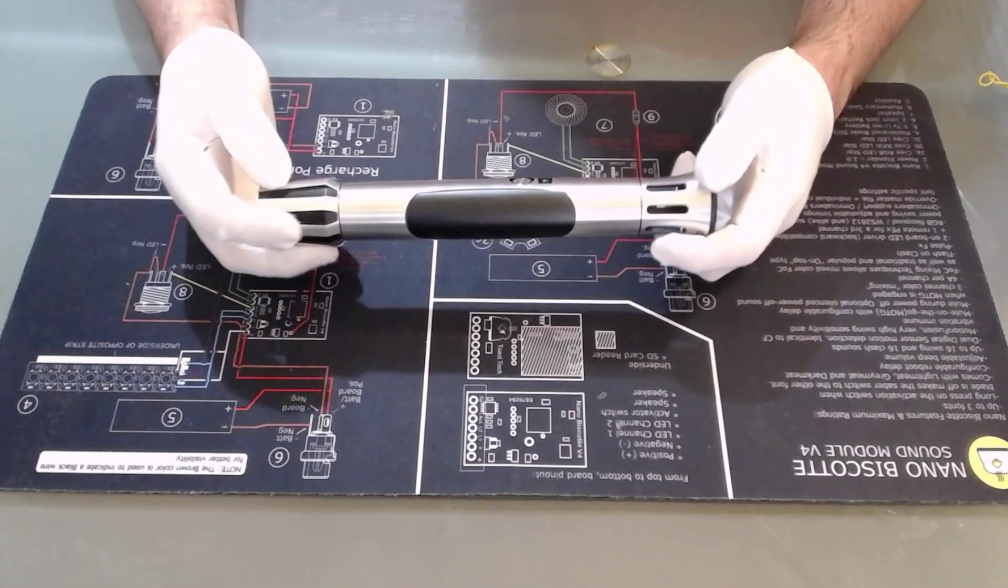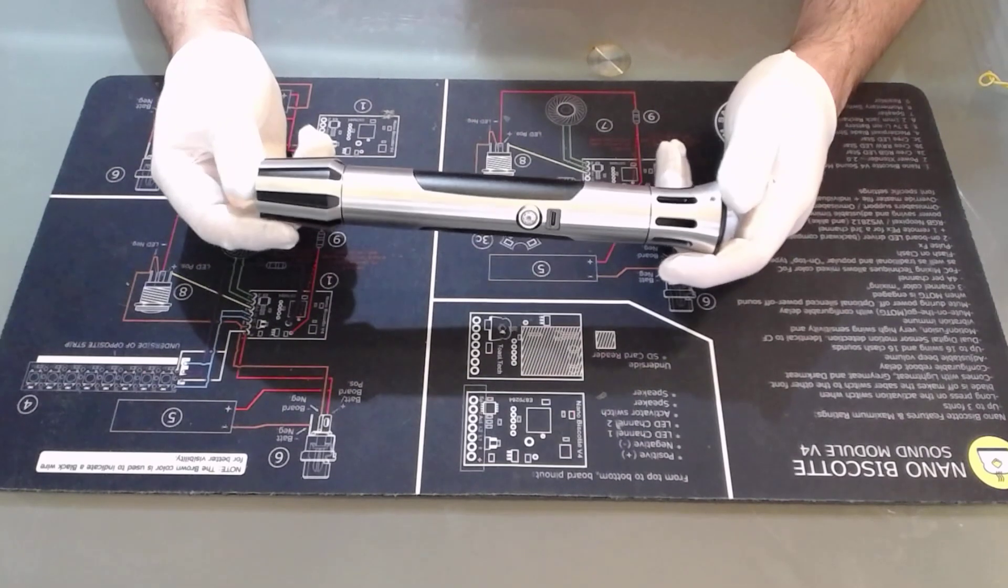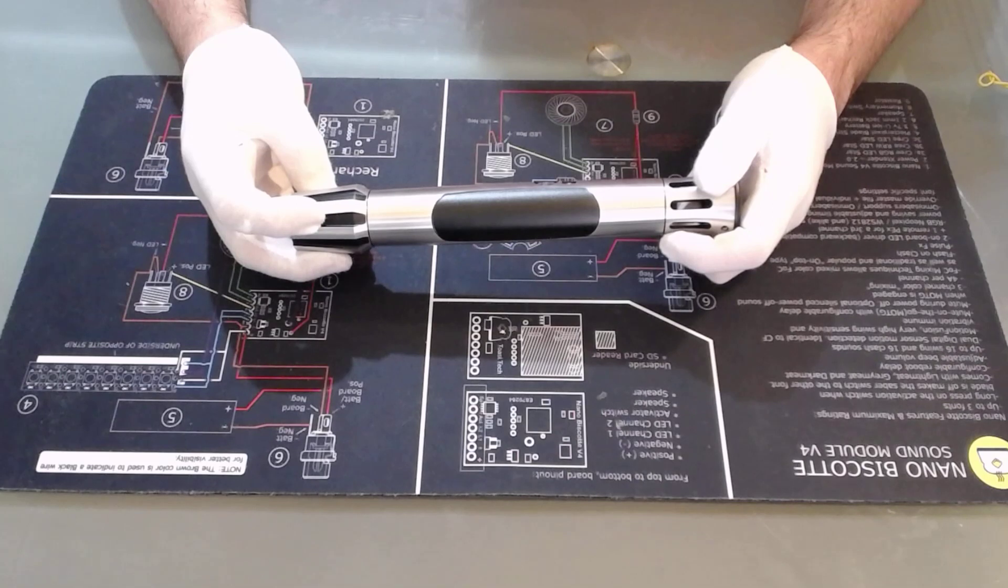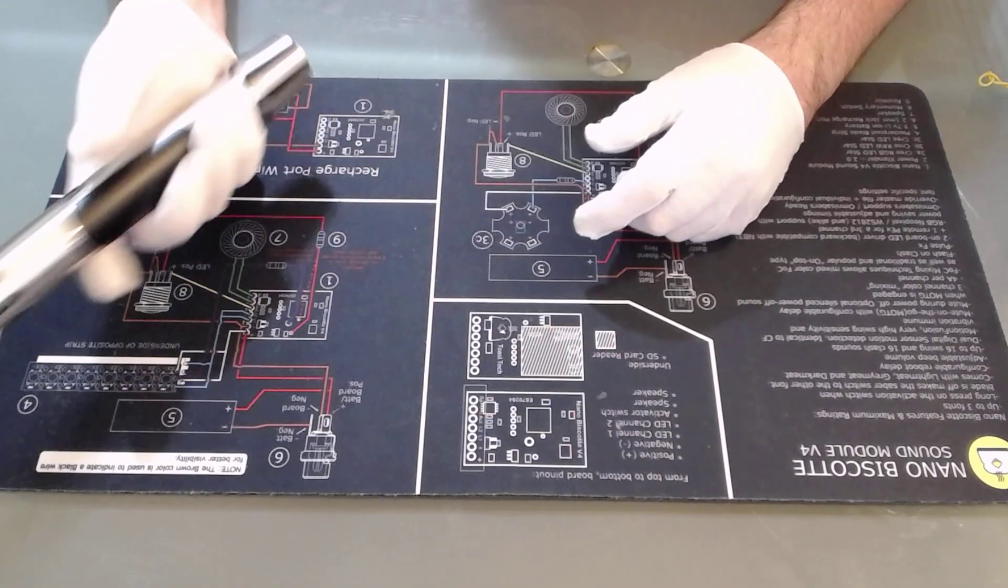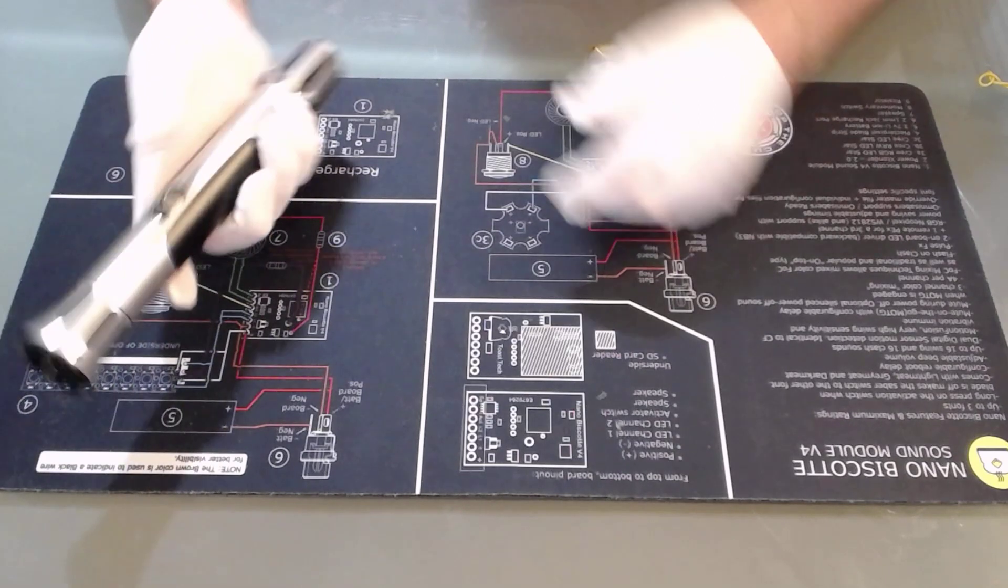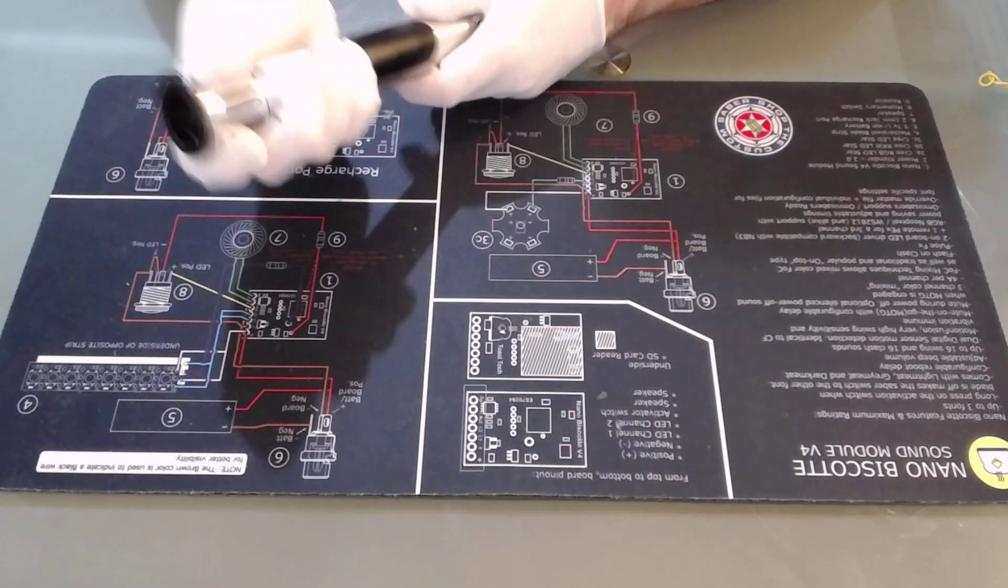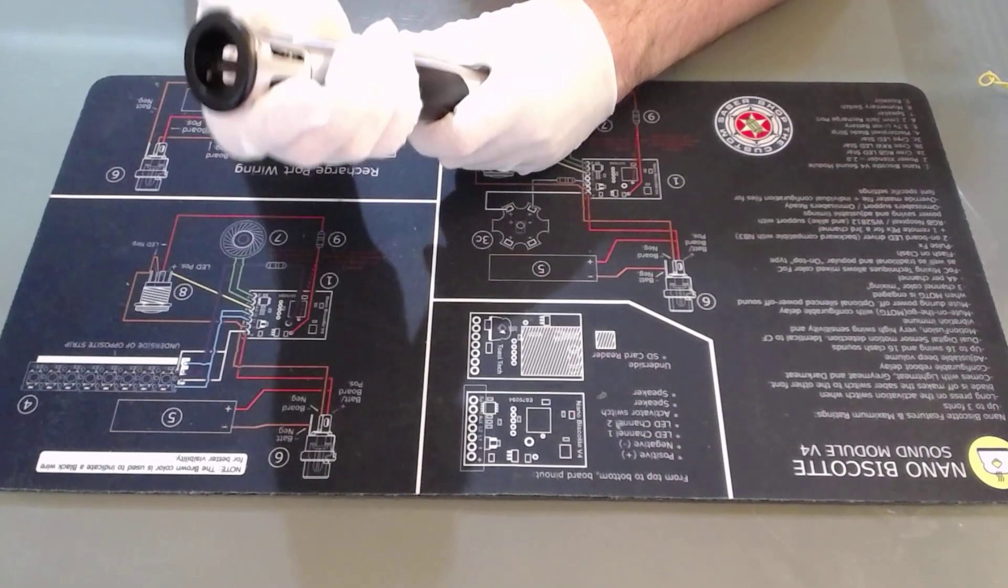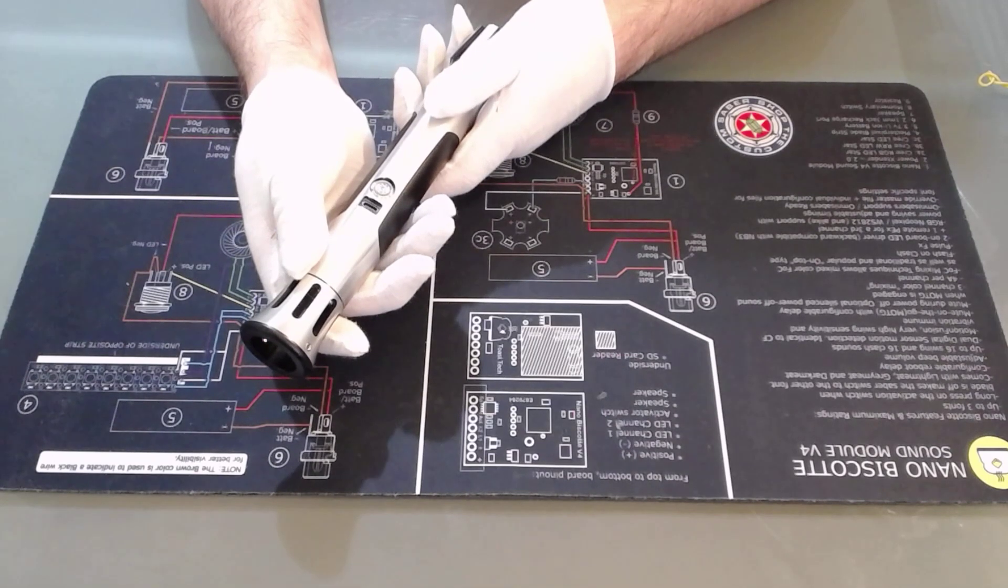So uses for this one. It's quite a short hilt, being a compact hilt. So if you're using it for choreography or dueling, I would suggest this is more suited for the one-handed Makashi practitioners. You can get two hands on the saber. I have quite large hands, so if you've got smaller hands, you'll have an easier job wielding it with two hands.